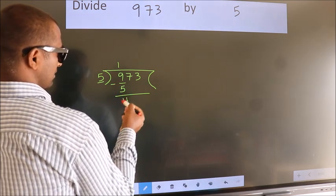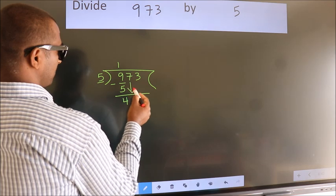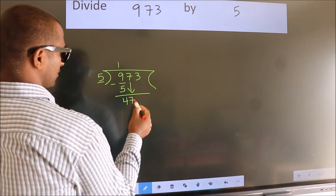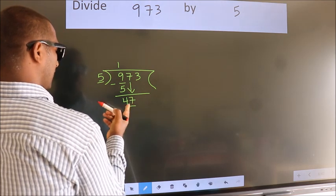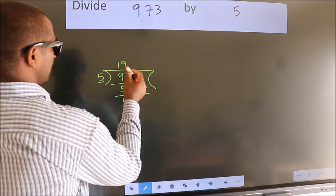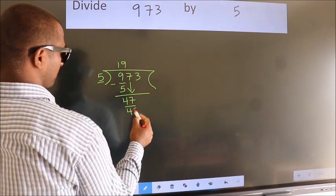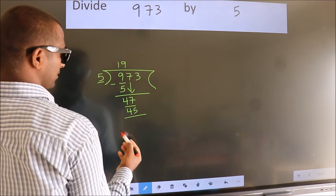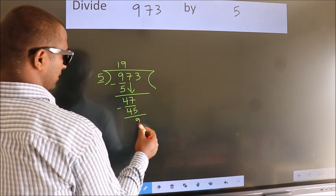After this, bring down the beside number. So 7 down, so 47. A number close to 47 in 5 table is 5 nines 45. Now we subtract. We get 2.